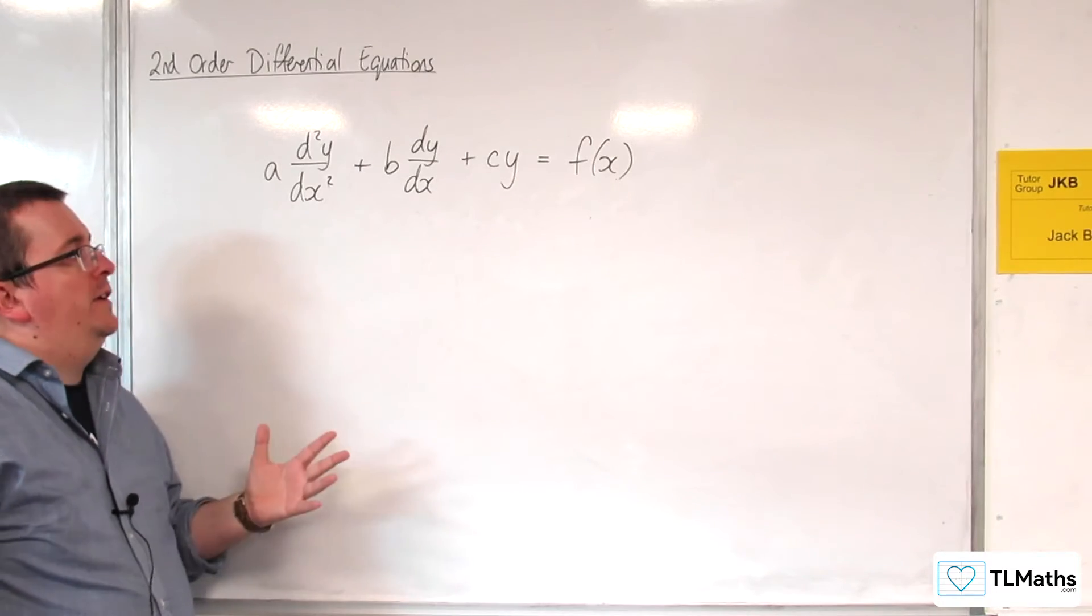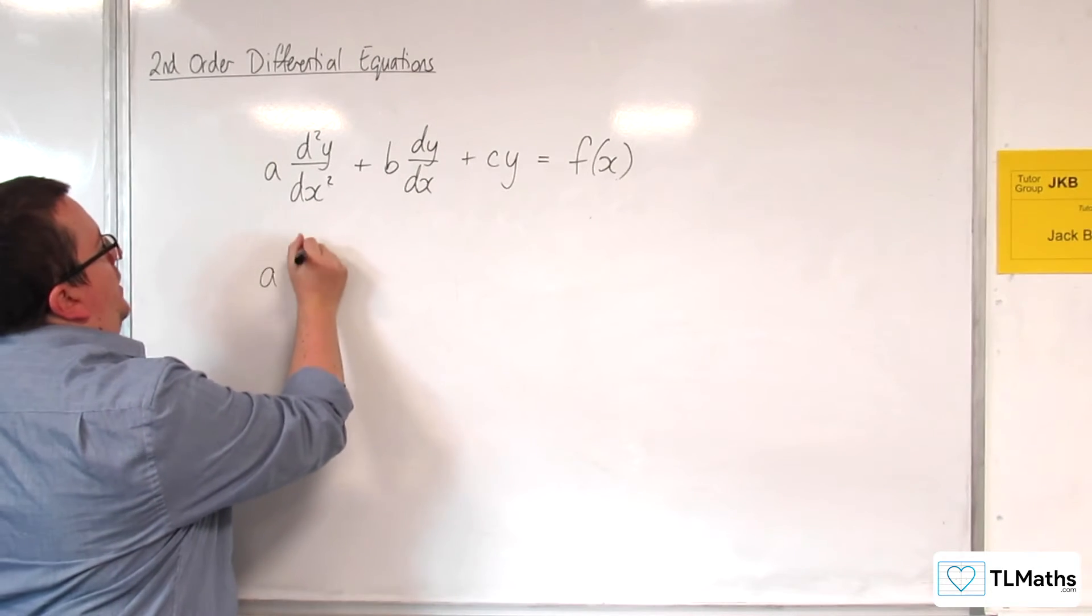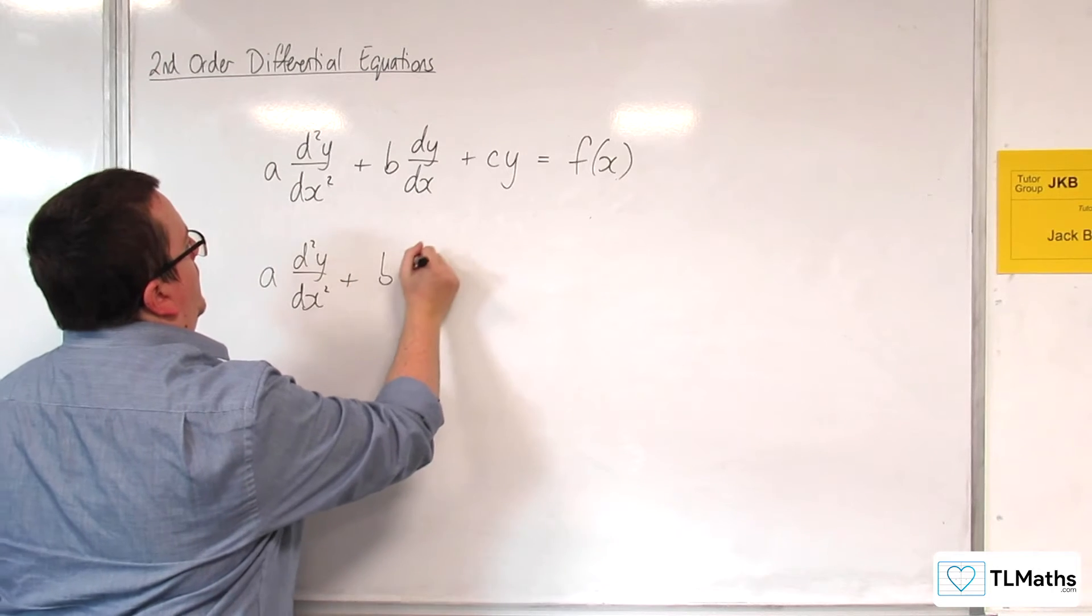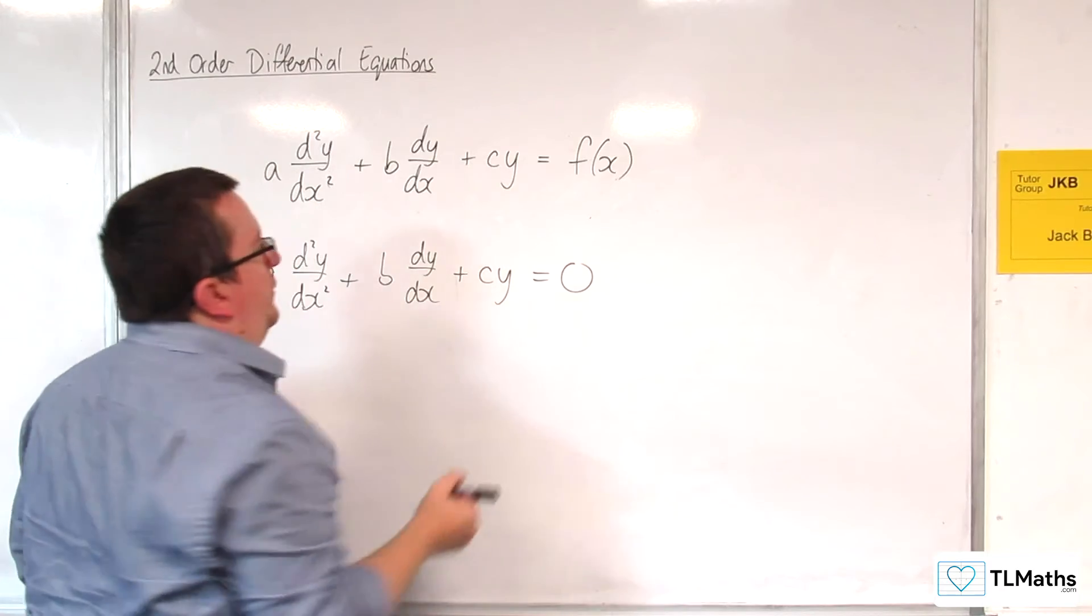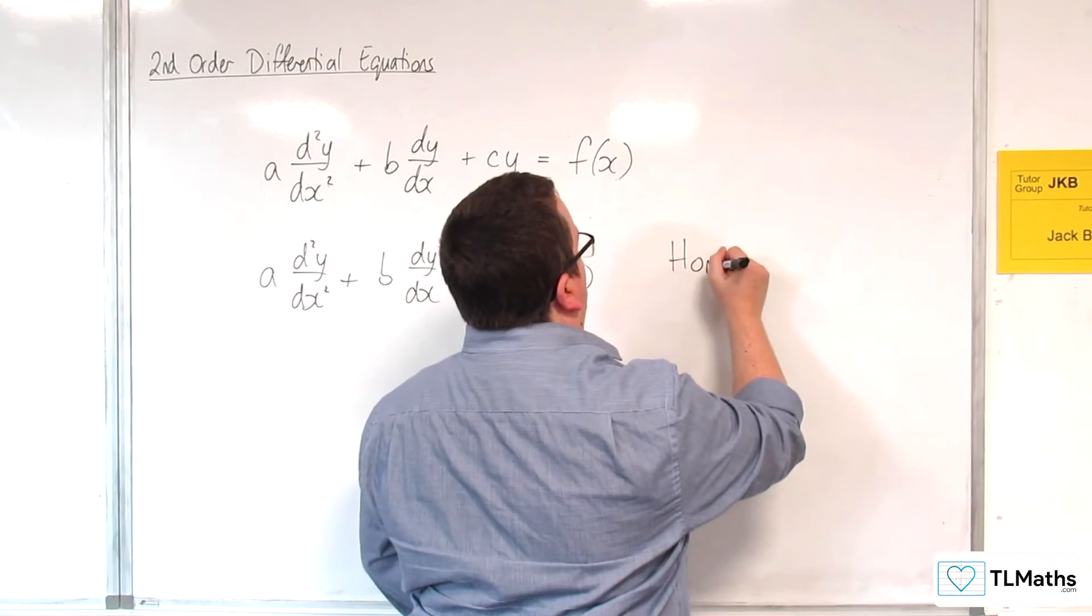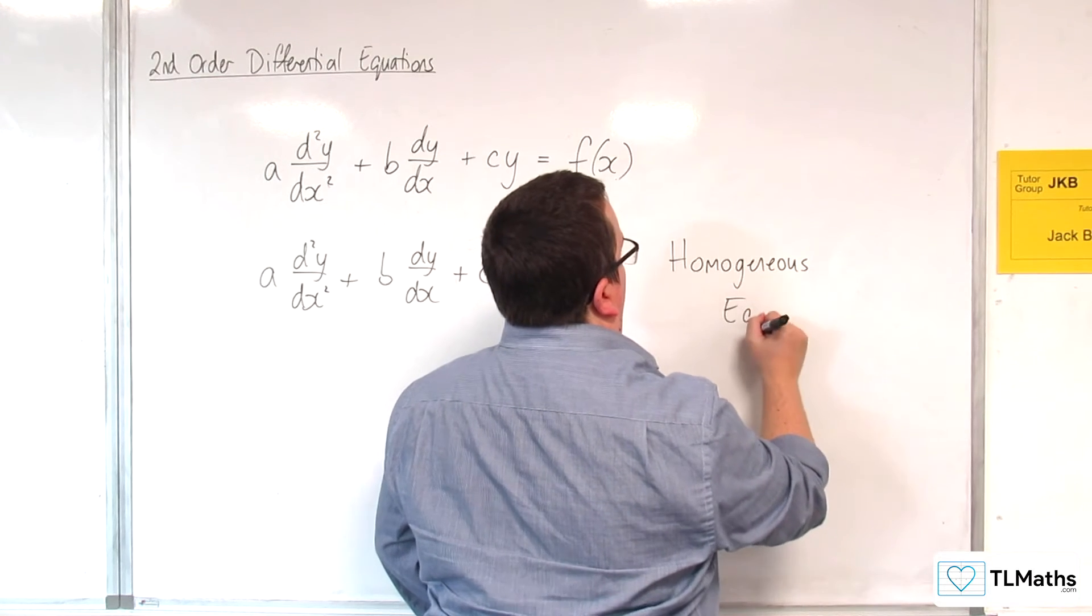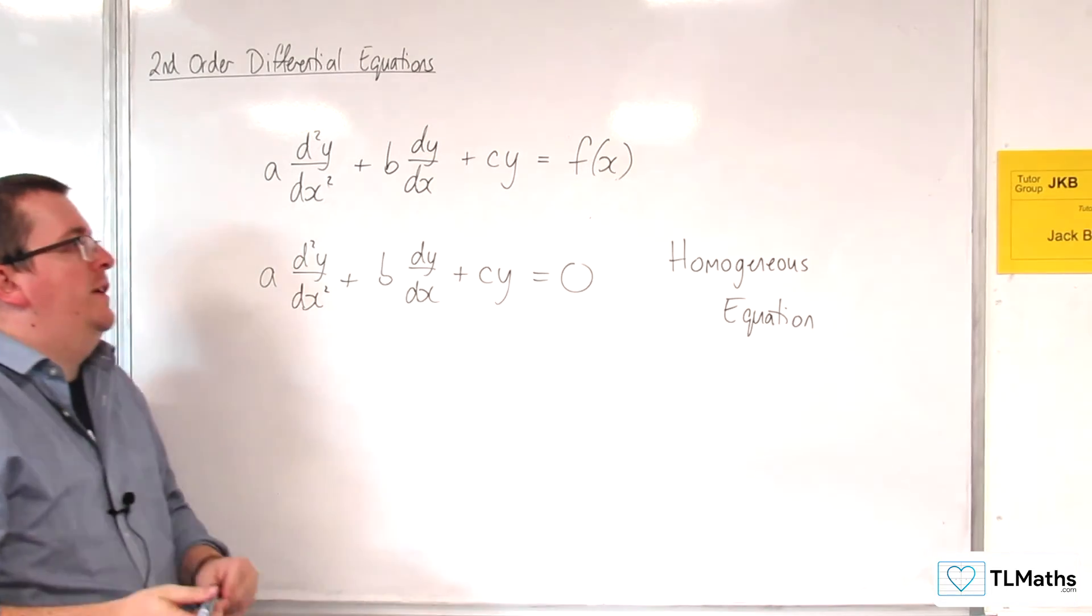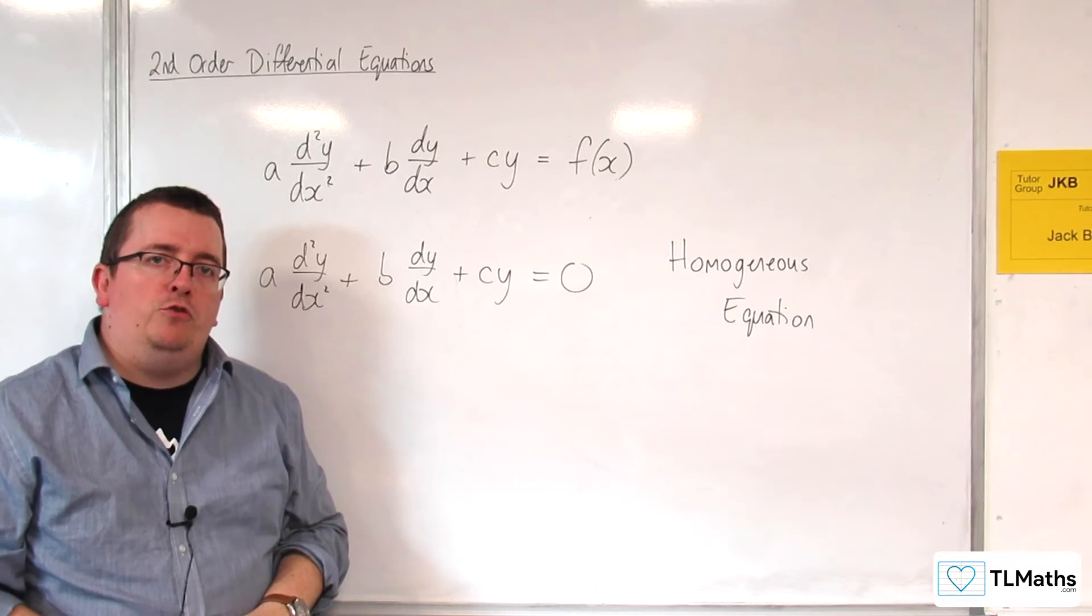So that's the format that we're going to consider. If it is equal to 0, instead of having it equal to f(x) and we put it equal to 0, we refer to this as a homogeneous equation. So we have a homogeneous equation, which is this simplified version where we have it equal to 0.